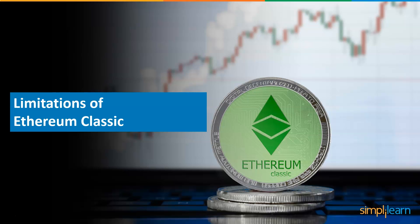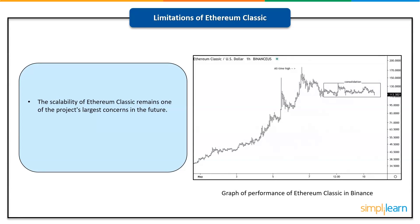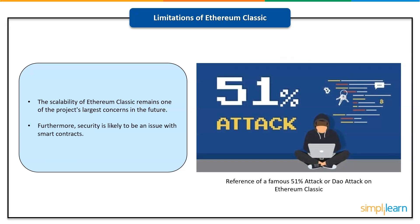Although Ethereum Classic, like ETH, enables smart contracts and targets the same market, ETH has grown in popularity as the more trustworthy of the two networks. Despite numerous software upgrades, the scalability of Ethereum Classic's payment mechanism remains one of the project's largest concerns. Furthermore, security is likely to be an issue with smart contracts, especially because Ethereum Classic has already been hacked and millions of dollars stolen.